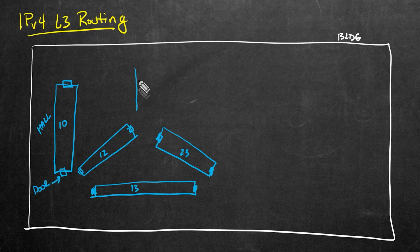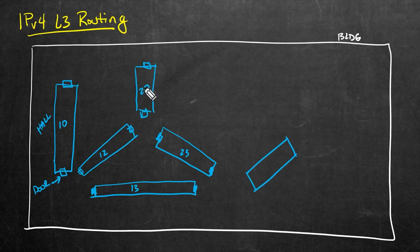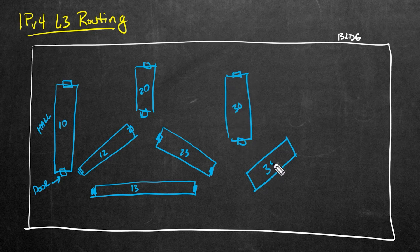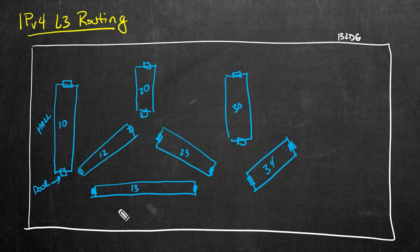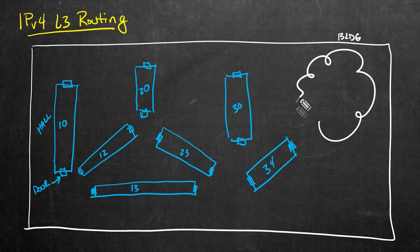Let's draw a few more halls with doors at each end. How about one more hall over here — let's call it hall 20. And let's put another one here, hall 30. And over here, let's call this hall 34, again with doors at each end. If we need more doors in the middle of the hall to go to other offices, we can add those as well. And I'll represent the rest of the halls in the building with a little cloud showing there's more halls in that direction.